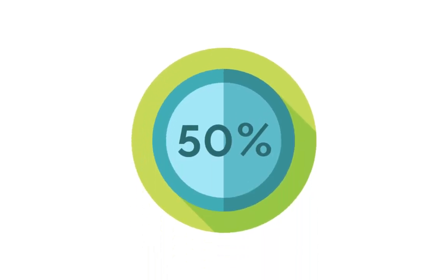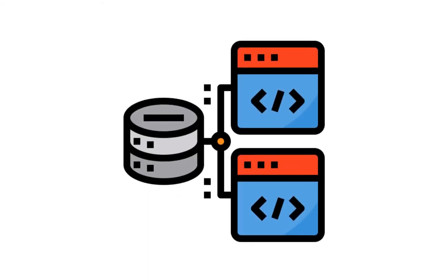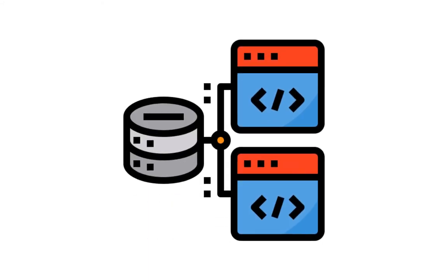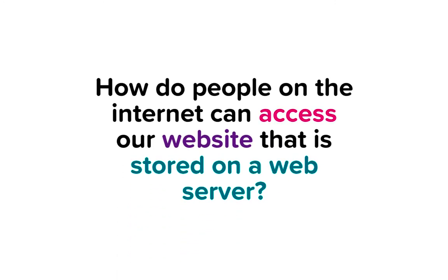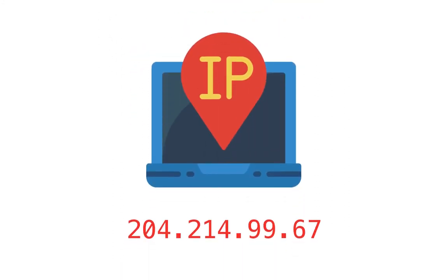Now we are only halfway through. Let's say we purchased a web hosting service and created our website pages. How do people on the internet access them? Simple — every computer has a unique name, and we call this unique name an IP address, and it looks like this. A web server is nothing but a computer, so when we purchase the web server from a web hosting company, they will provide us with an IP address for our web server. People on the internet can access our website using this IP address.